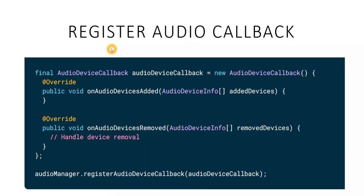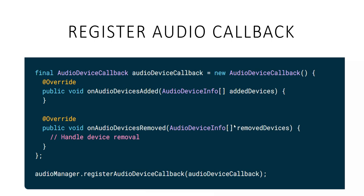The first step in my application is to register the audio callback. In almost every application, the first step is registering the source we are using. Here we have to register the audio callback. We create an audio device callback which notifies your app when an audio device connects or disconnects. We have to register this audio device callback and implement the overridden methods to know if a device is added or removed. These are the APIs and functions used to perform that.